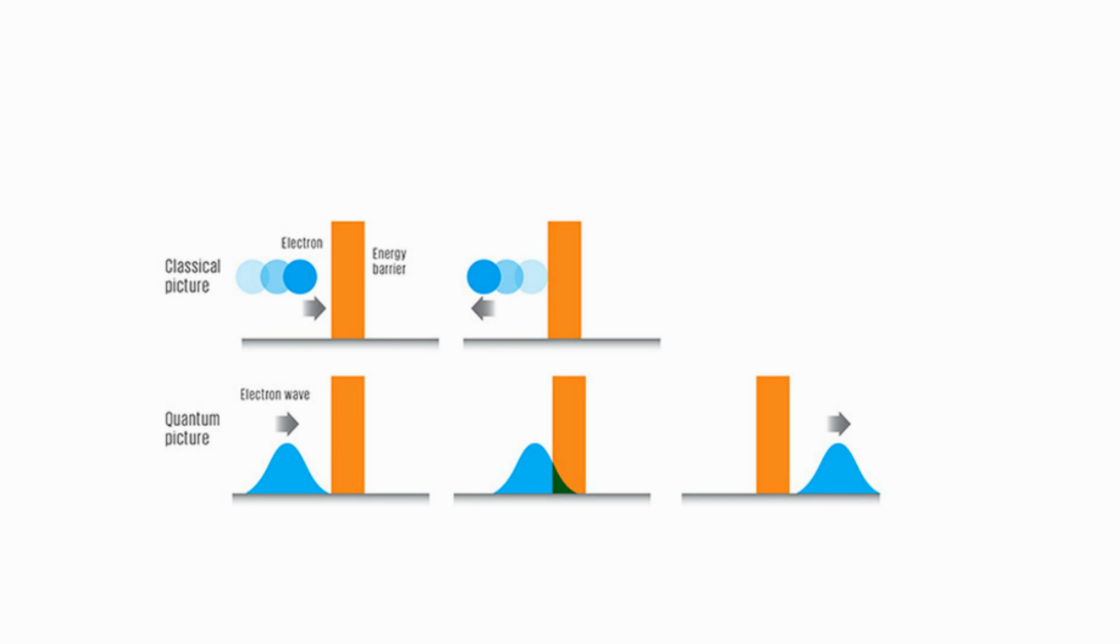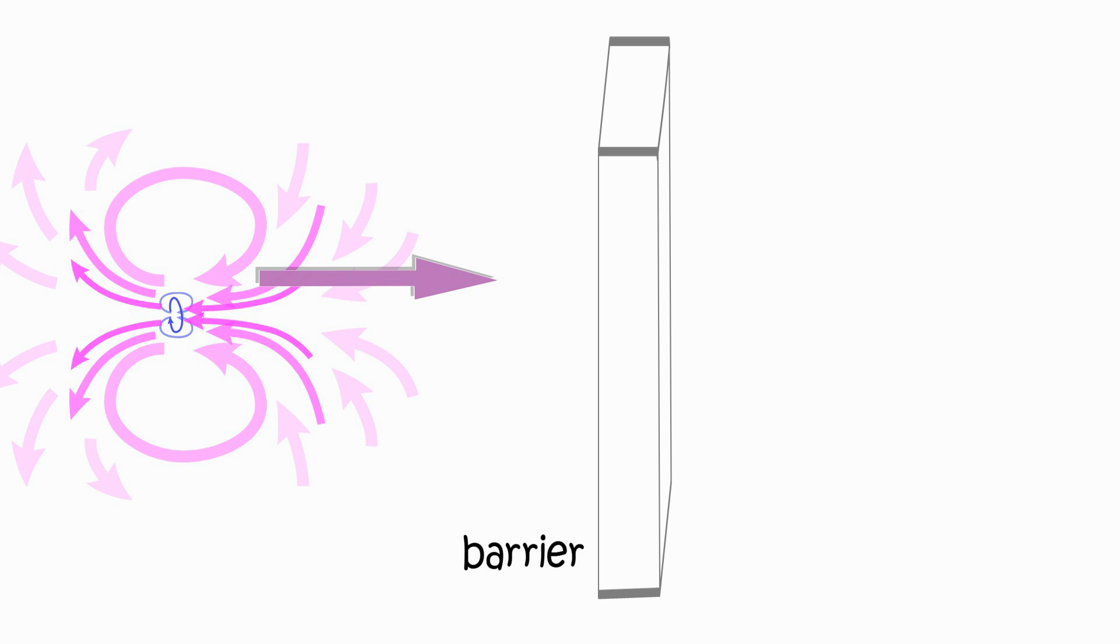Quantum tunneling is the phenomenon where a particle tunnels through a barrier that it classically cannot surmount. This is a traveling electron. The barrier is a thin layer of neutrally charged matter.